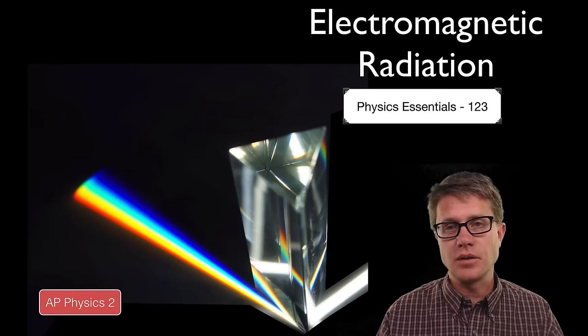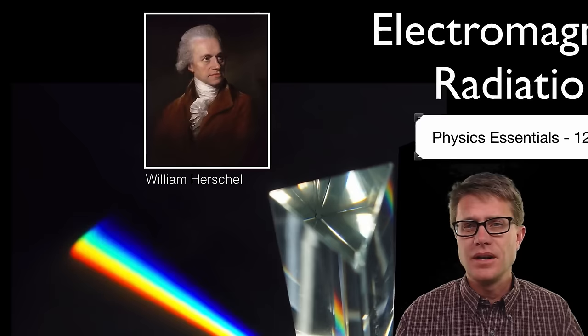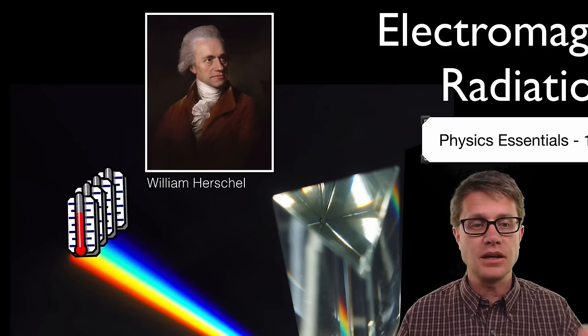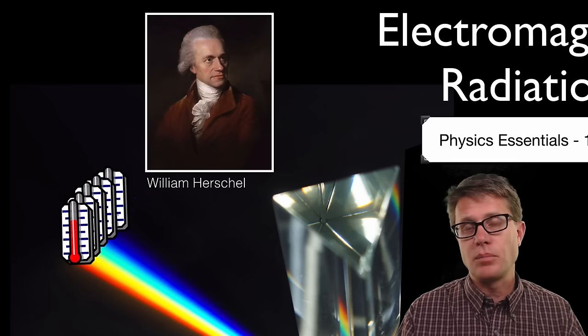Newton had shown that if you shine white light into a prism, it breaks it apart into its different colors. Another scientist wanted to know if there was any relationship between different colors of light and temperature. William Herschel took a thermometer and put it in the purple light, then the blue light, then the green, yellow, and red. He wanted to figure out the different temperatures depending upon color.